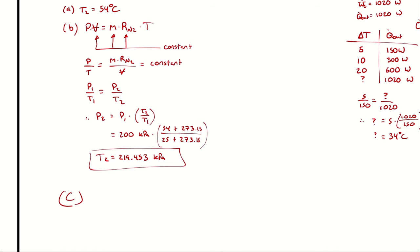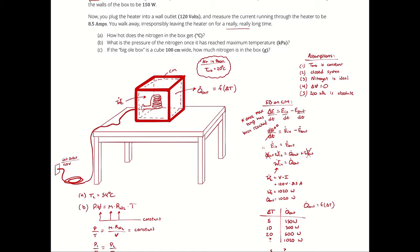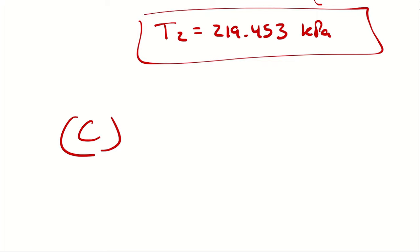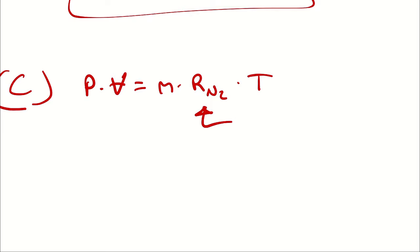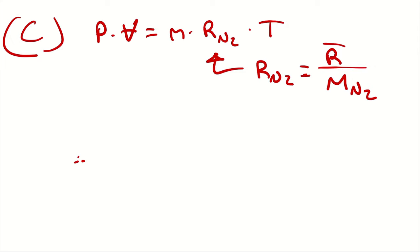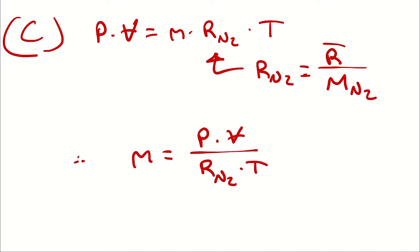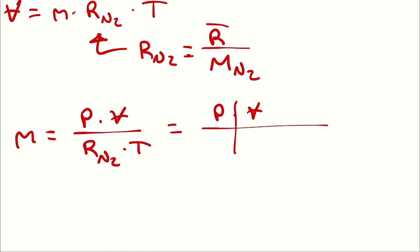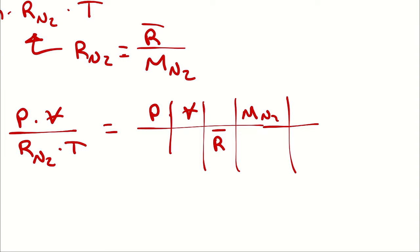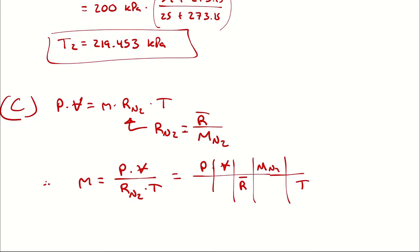Part C: if the big box is a cube 100 centimeters on a side, how much nitrogen is in the box? Using the same ideal gas law, this time I can't use a proportion so I need to calculate the specific gas constant. The specific gas constant of a substance is the universal gas constant divided by the molar mass of that substance. Therefore mass equals pressure times volume divided by the specific gas constant times temperature, which I'll write as P times V divided by (R-universal divided by molar mass) divided by T.